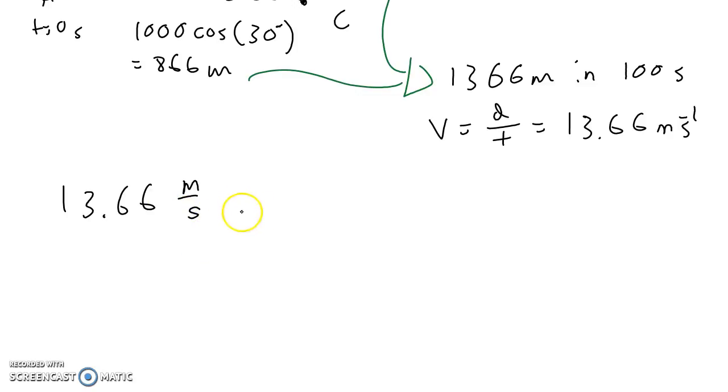So first we'll convert seconds to hours, knowing the relationship that there are 60 seconds in a minute and there are 60 minutes in an hour. Those are the relationships between seconds and minutes and minutes and hours. We just need to decide if we want to multiply or divide.